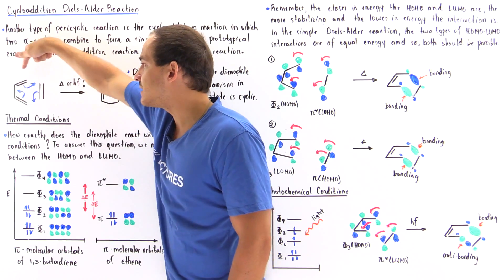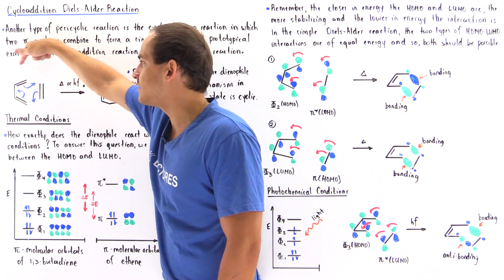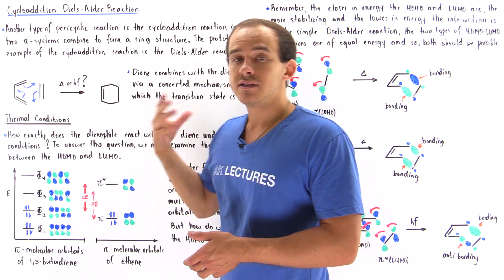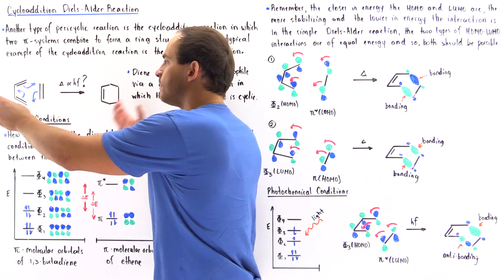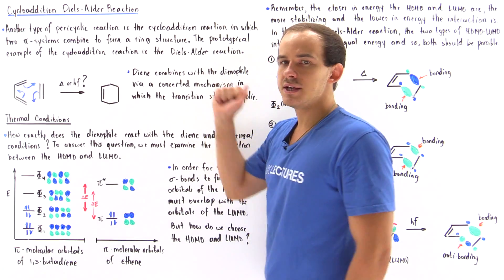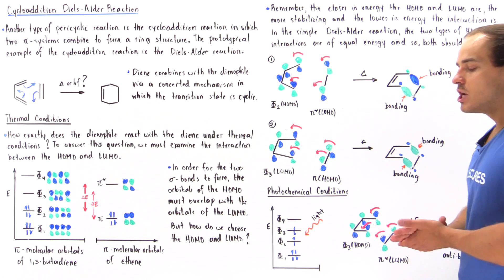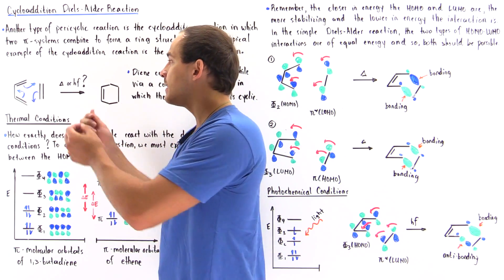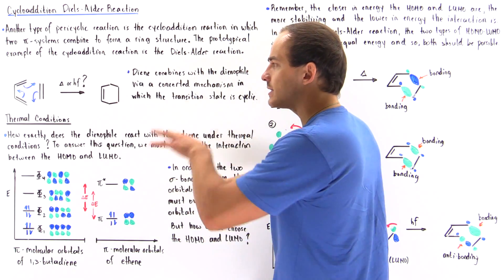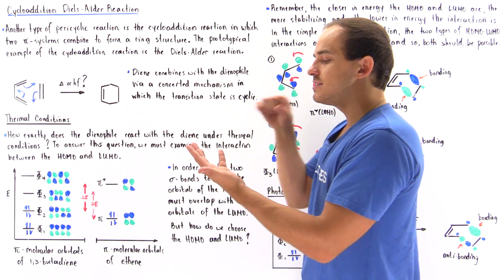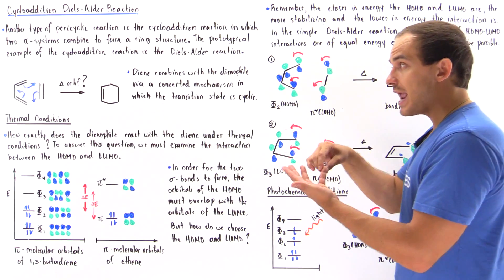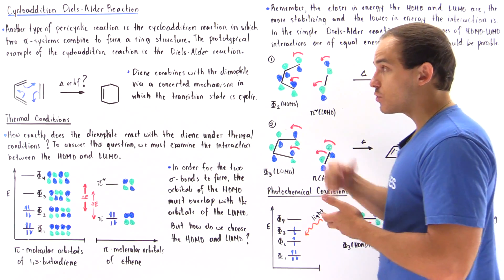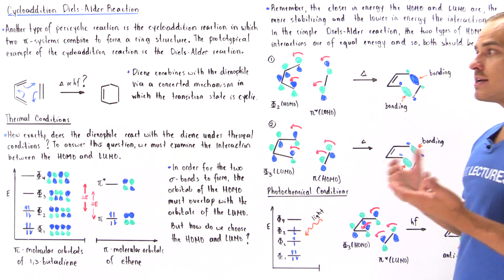We have one pi system, the 1,3-butadiene — our diene — and the second pi system, the ethene, which is also known as the dienophile. The diene and our dienophile combine to form our product, in this case cyclohexene. This is a cycloaddition reaction: two pi systems combine via a single step to form the product, with one transition state that contains a cyclic structure and one activation energy.